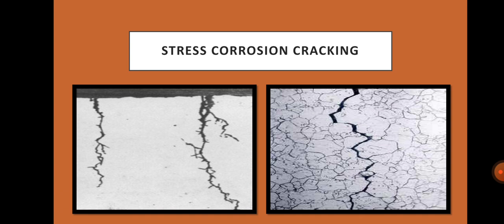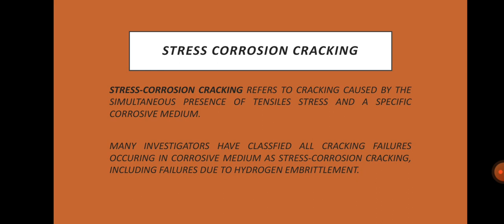Stress corrosion cracking refers to cracking caused by the simultaneous presence of tensile stress and a specific corrosive medium. Many investigators have classified all cracking failures occurring in a corrosive medium as stress corrosion cracking, including failures due to hydrogen embrittlement. It is the growth of crack formation in a corrosive environment and can lead to unexpected and sudden failure of normally ductile metal alloys subjected to tensile stress, especially at elevated temperature. To prevent stress corrosion: avoid the chemical species that cause stress corrosion cracking, control hardness and stress levels, and use materials known not to crack in the specified environment.